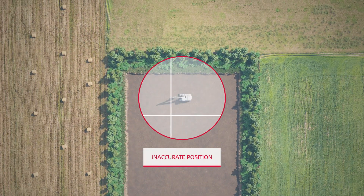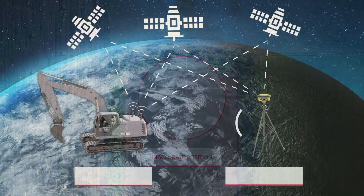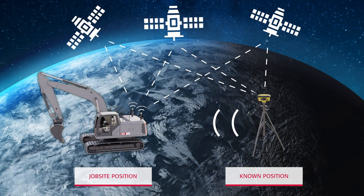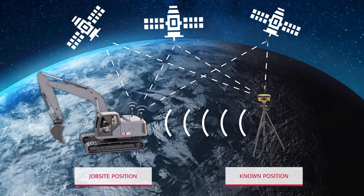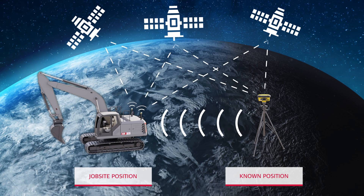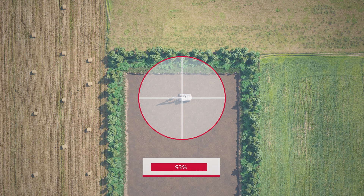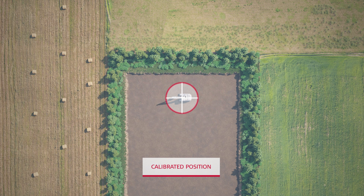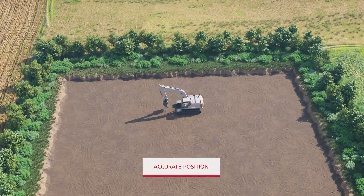This deviation is because of many external factors, such as signal travel time from satellites to receiver. Therefore, we use a correction source on a known position that constantly sends the current GNSS position deviation for the job site. The GNSS receiver recalculates its position with this correction data, and now we have a centimeter accurate position.